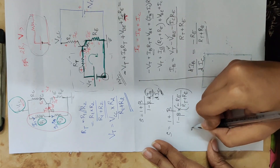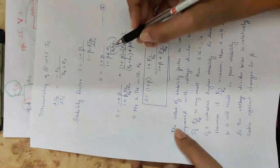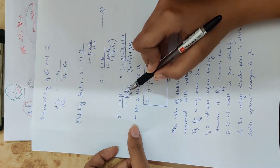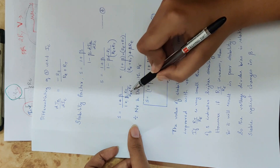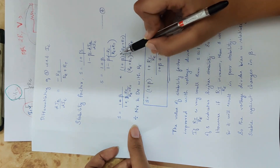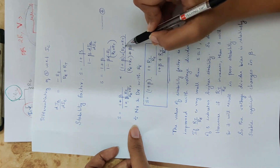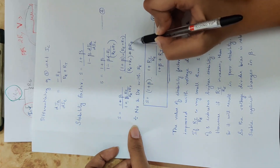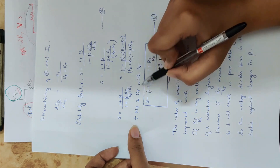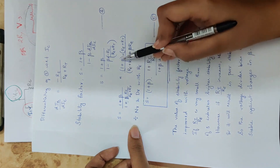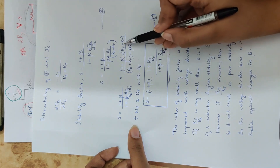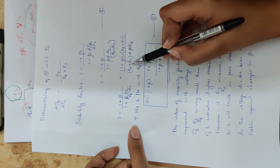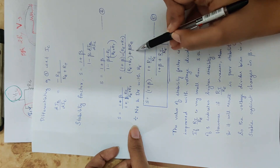Now simplify. Minus and minus gives: S equals 1 plus beta by 1 plus beta·RE divided by RE plus RT. The denominator becomes 1 plus beta into RE plus RT whole divided by RE plus RT plus beta into RE. Simplifying: RE divided by RE plus beta into 1 plus RT by RE, divided by 1 plus RT by RE plus beta.